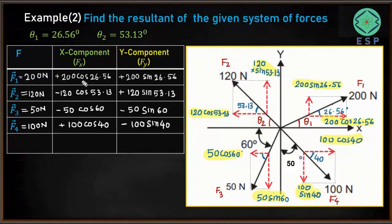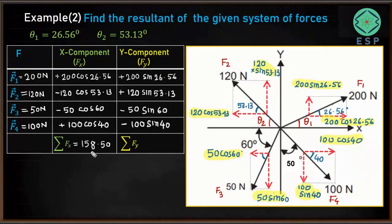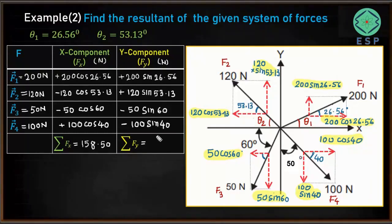Now we find the sum of all x components and the sum of all y components. Adding all x components together, the summation of Fx equals 158.50 Newtons. Adding all y components together, the summation of Fy equals 77.85 Newtons.